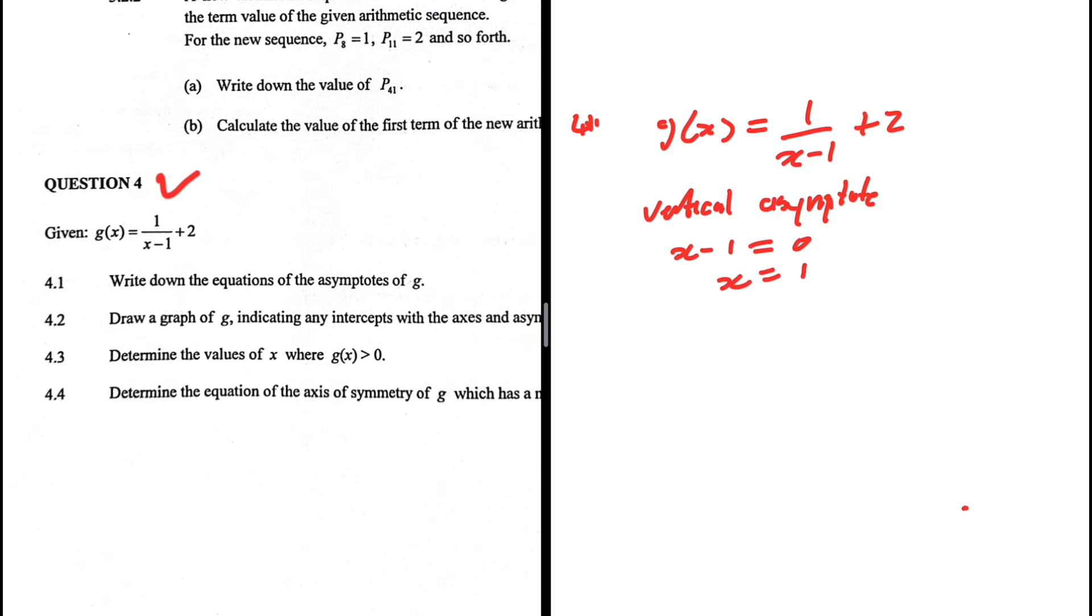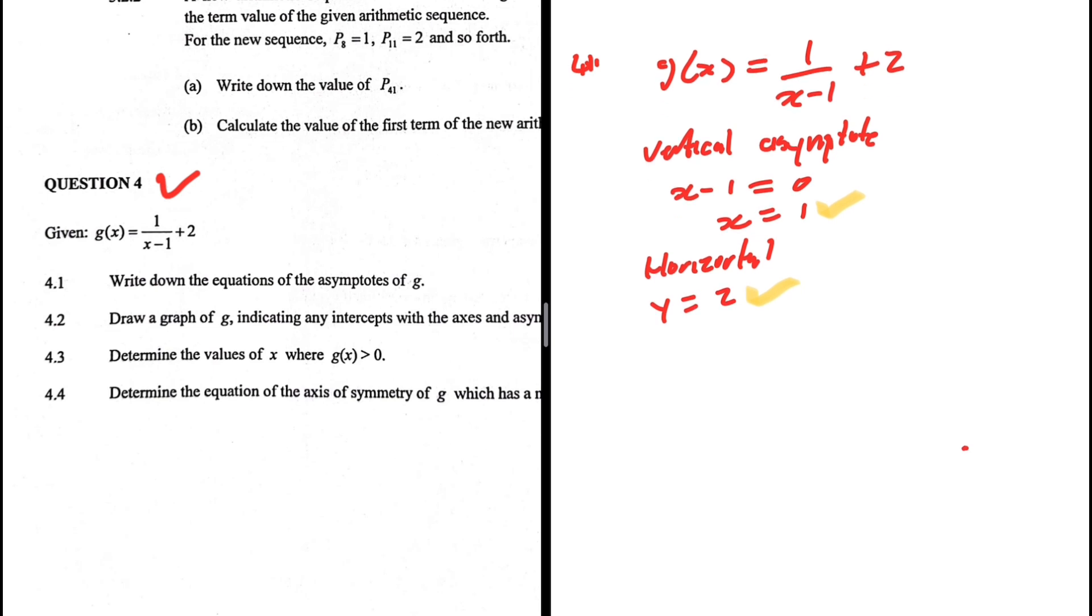And now our horizontal asymptote will be y is equals to 2 because we know that the graph cannot touch 2. So horizontal asymptote, y is equals to 2. There we go. x is equals to 1 and y is equals to 2 are our asymptotes. 4.1. Let's take a look at 4.2.